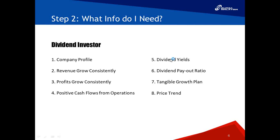The seventh piece of information I always look for is stocks with a tangible growth plan. Past successes don't guarantee future successes, but they have a resemblance. First, find out the company's past record — I look at both the past 5–10 years (the real past) and the past 12 months (the present), to see whether the stock is making money as of today.